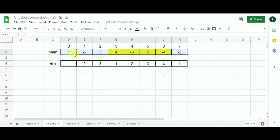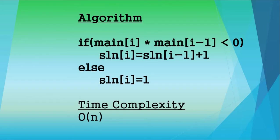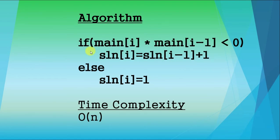Here is the algorithm: if mean[i] multiplied by mean[i-1] is less than zero — where mean is the problem array — then solution[i] equals solution[i-1] plus one; otherwise solution[i] equals one. The time complexity of this dynamic programming algorithm is O(n).